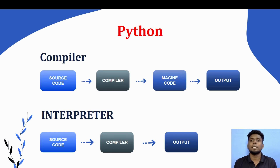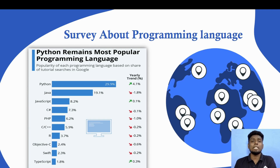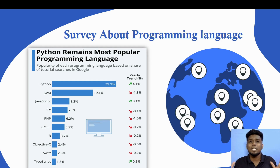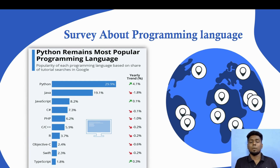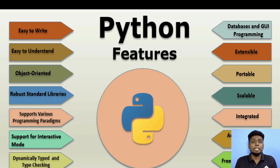Python's users have increased because of its features. This is a recent 2020 survey. Python's users are visible and growing. The most familiar features are: easy to write, easy to understand, object-oriented, portable, scalable, integrated, and extensible. We are going to go into depth on each of these.